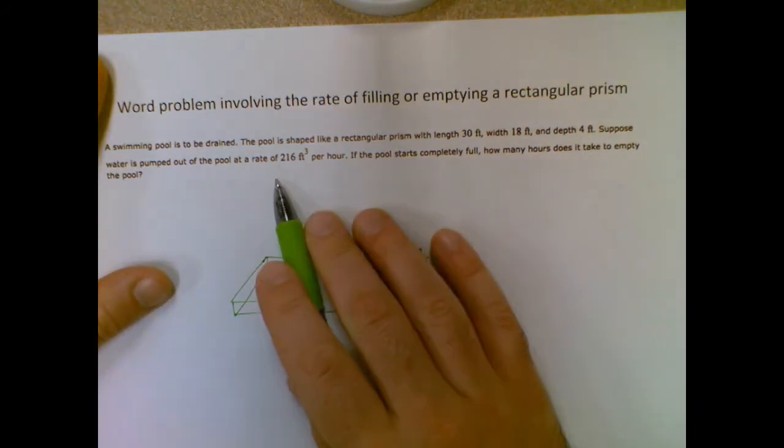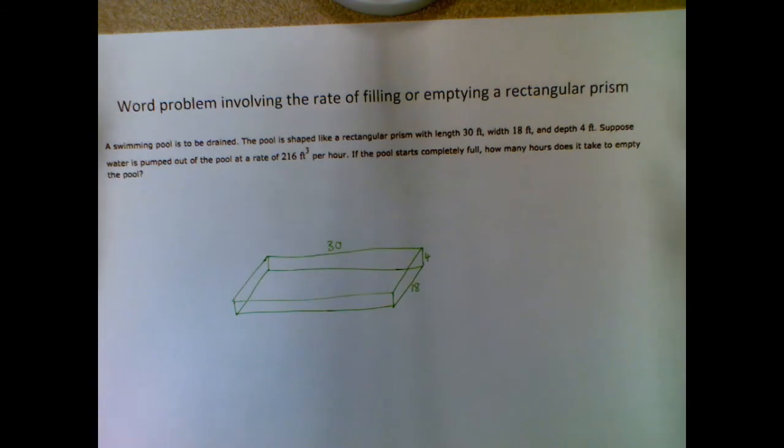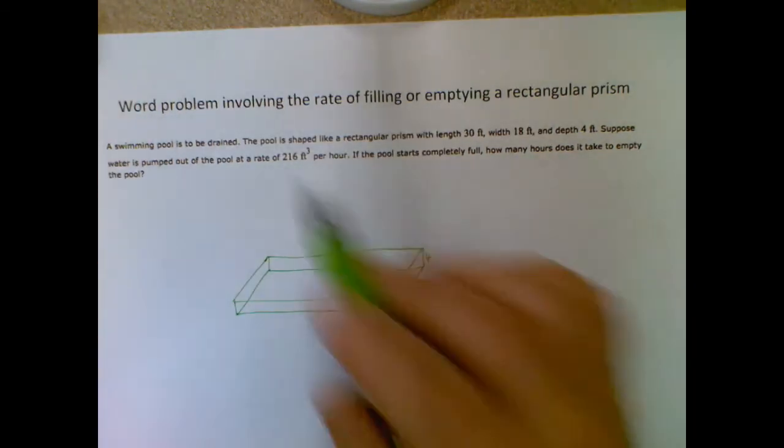And we're pumping water out of the pool at 216 cubic feet per hour. All right, that's fine. So let's figure out how much water is in the pool, and then we'll divide by that.